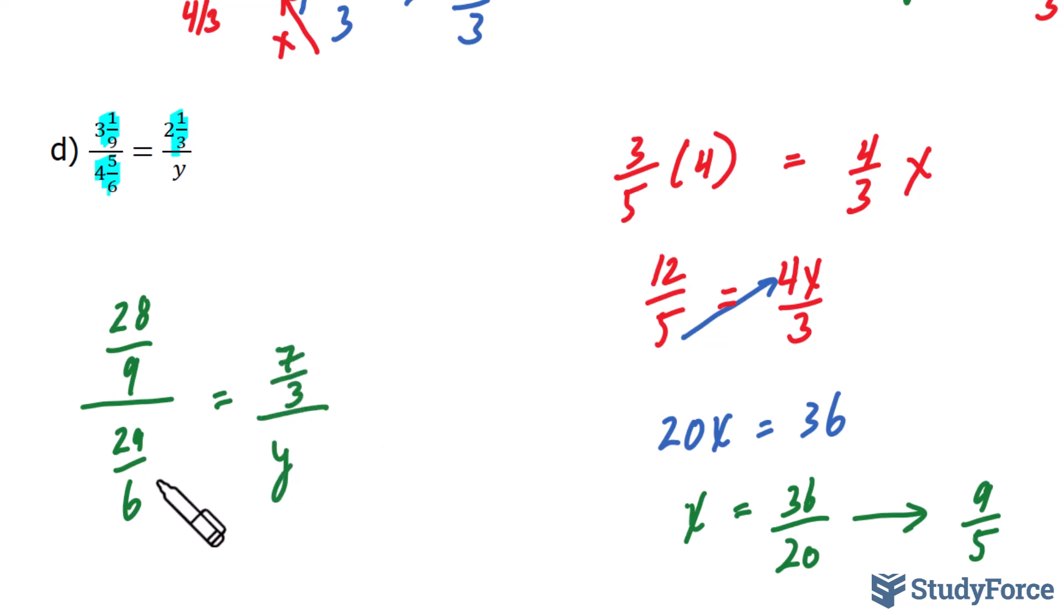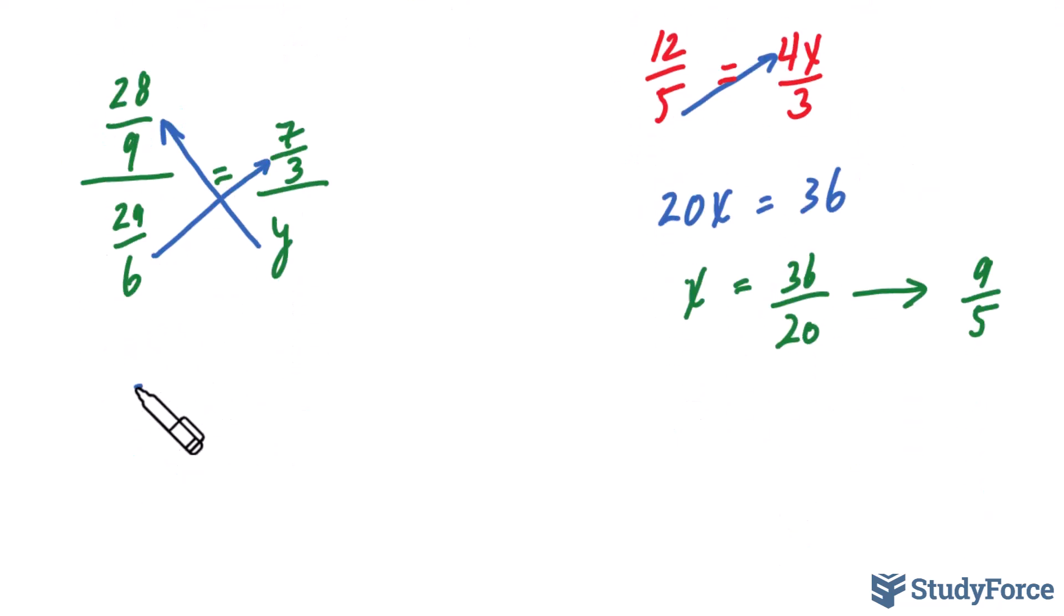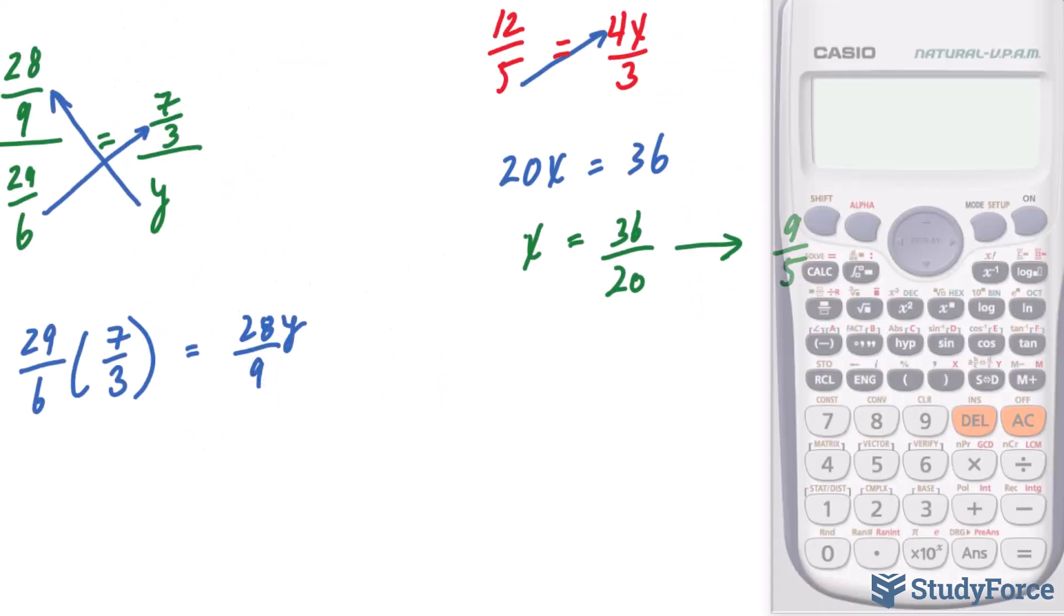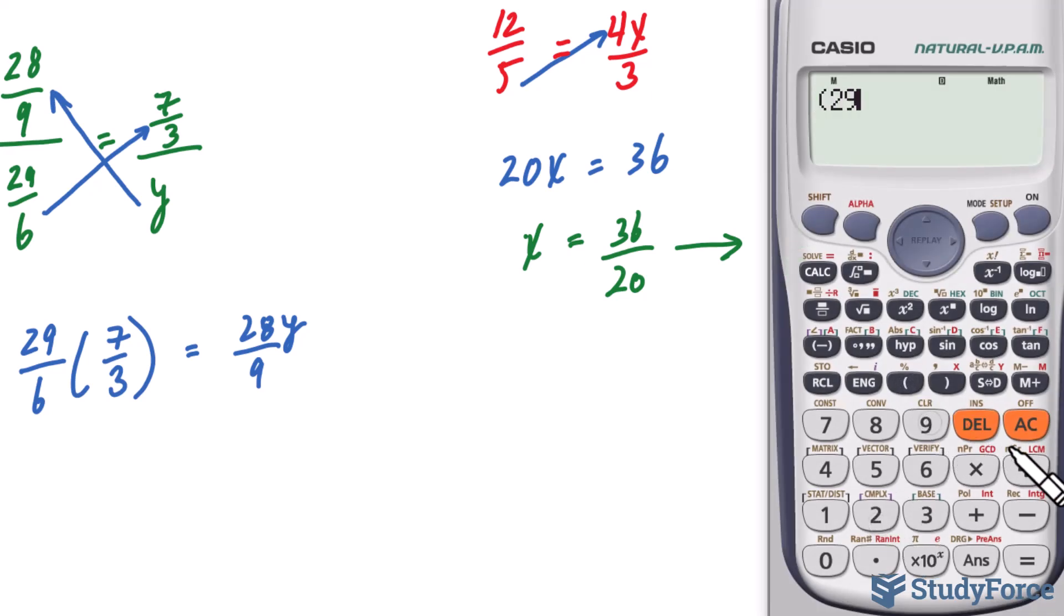Now we cross-multiply. We'll take that fraction and multiply it to that fraction. And y times 28 over 9. Let's multiply 29 over 6 with 7 over 3. And 28 over 9 with y. We know that will become 28y over 9 anyway. So let's just write it down that way. You can multiply this by hand, or you can use your calculator. Let's go ahead and use our calculator. We have 29 over 6 multiplied to 7 over 3. And we end up with 203 over 18.